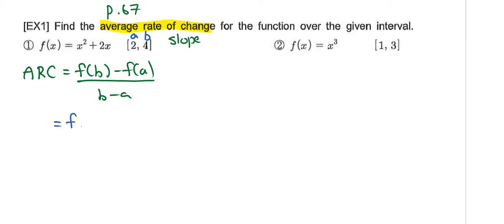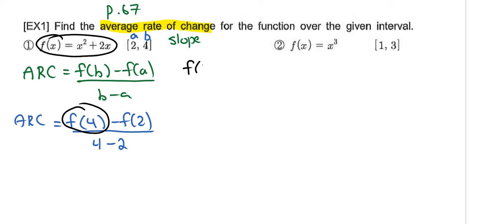So now if you plug those in, that's gonna be f of 4 minus f of 2 all over 4 minus 2. That's your average rate of change. Now if you want to evaluate f of 4, go back to your original function. f of 4 is going to be 4 squared plus 2 times 4, so that's gonna be 16 plus 8.